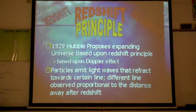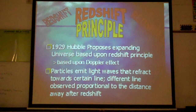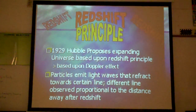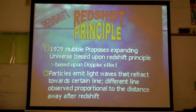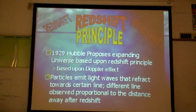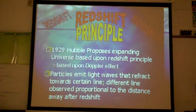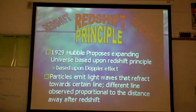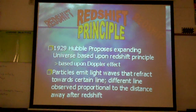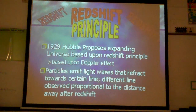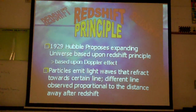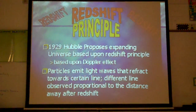The red shift principle states that particles emit light waves that refract or bend towards a certain line. This helps to measure velocity, which is the speed and direction that the galaxy is moving away from the Earth. Scientists study the red shift and look at the light moving away from the Earth to measure velocity, and that's how we can determine that our universe is expanding outward from the Big Bang Theory.